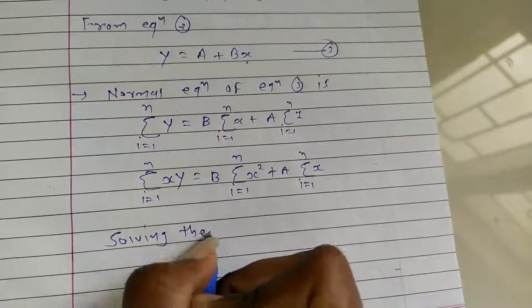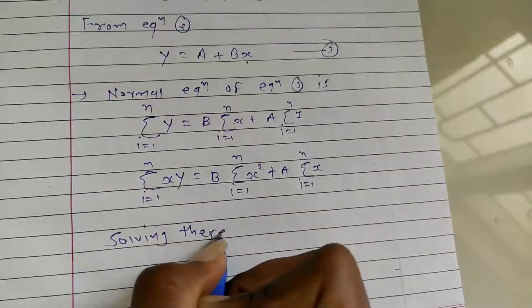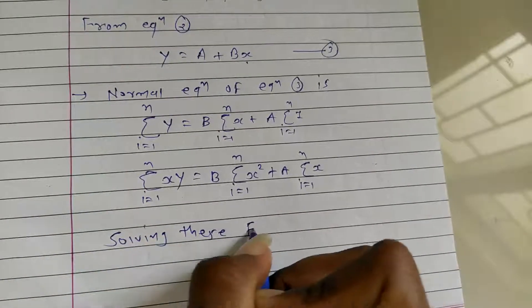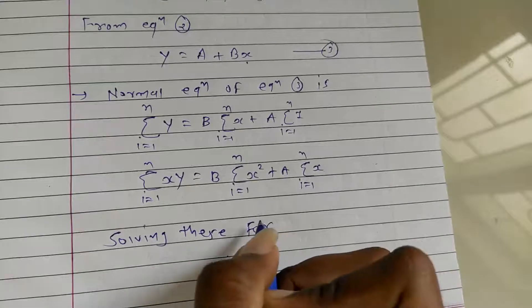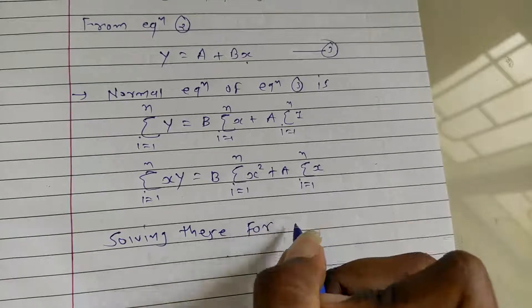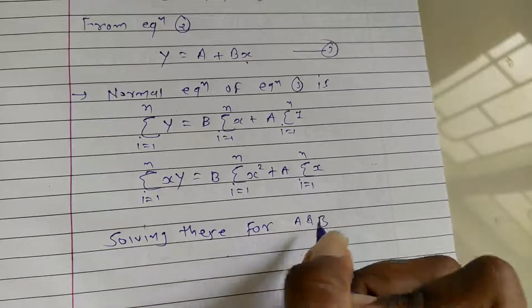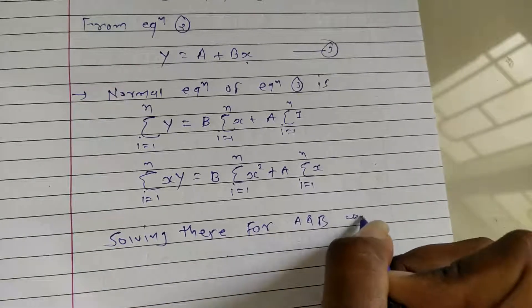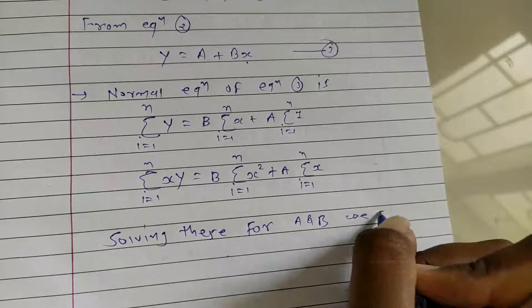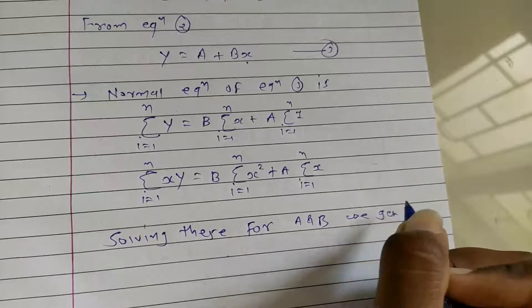Solving the normal equations for capital A and capital B, we get the values of A and B.